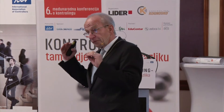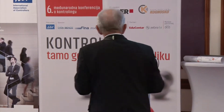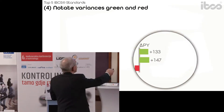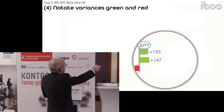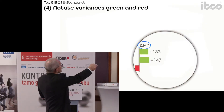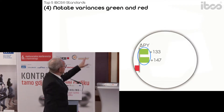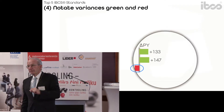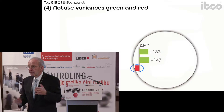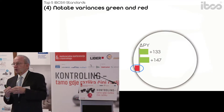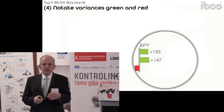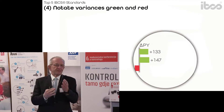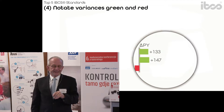Red and green are used for variances. If you say this is a previous year delta, the green ones are the good ones and the red ones are the bad ones. Of course, if it's cost versus sales, they go in different directions.